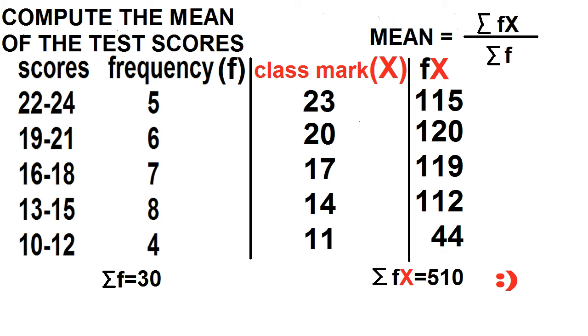Then divide the product of the frequency and the class mark by the total frequency. The mean is equal to 510 divided by 30 is equal to 17.